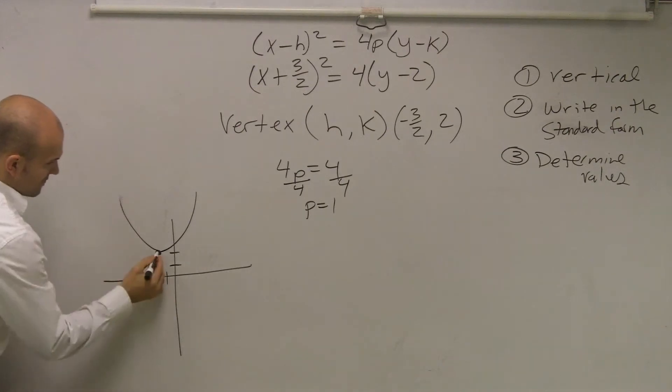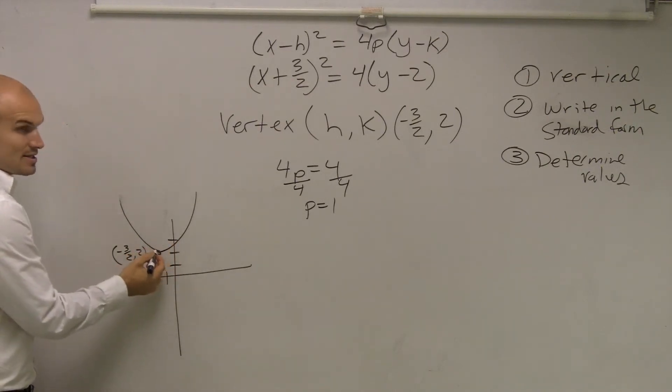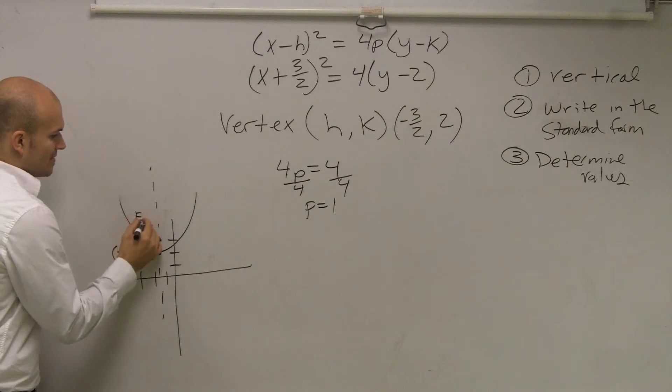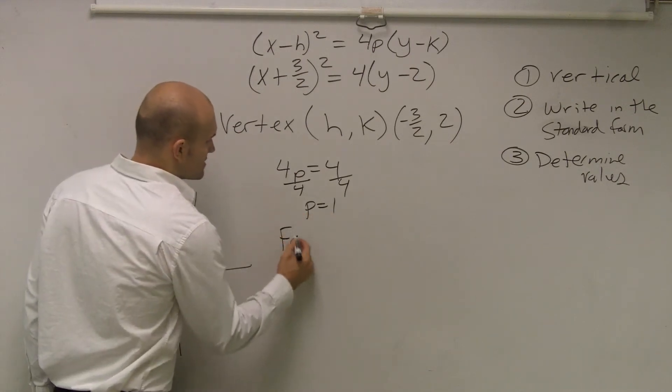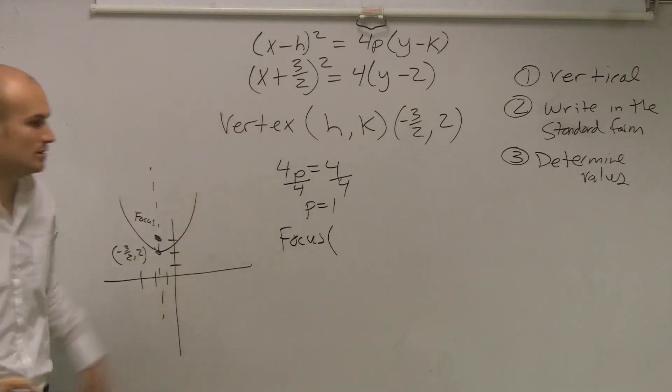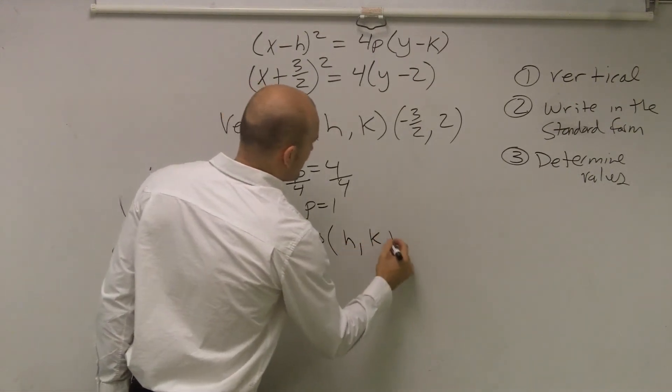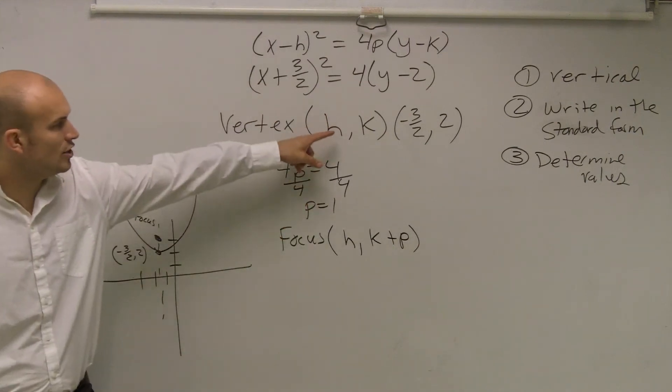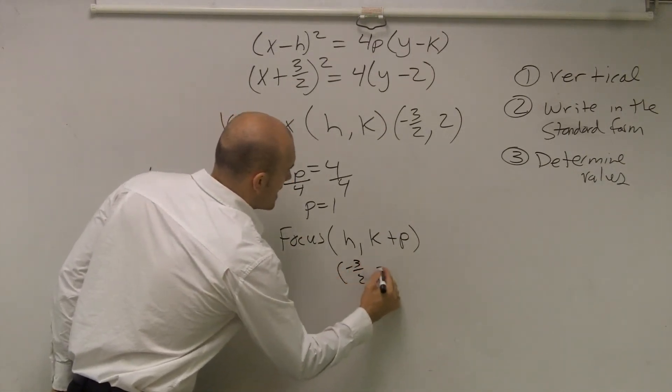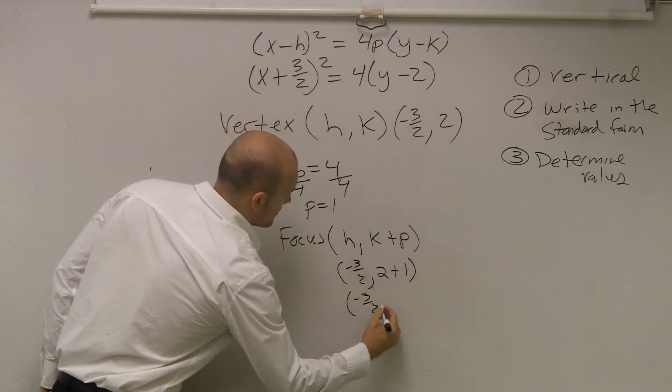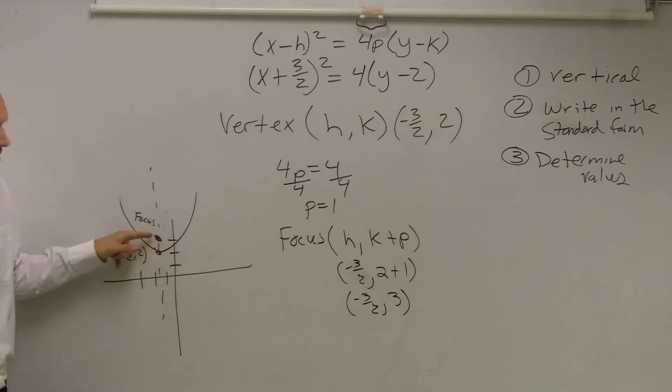So right now, I have my vertex, which is (-3/2, 2), and then I just said the p value is 1. So that's going to tell me my distance to go up to find my focus. Now, what is going to be the direction of my focus? I didn't move it left or right at all. All I did was I shifted it up 1. So to find the focus, the formula for a vertical is h, k plus p. Well, I know my k is 2. So it's going to be h is -3/2 comma 2 plus 1, which is that point, (-3/2, 3). Focus. Does everybody see how I got that?